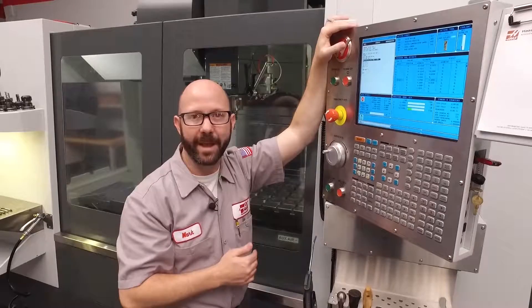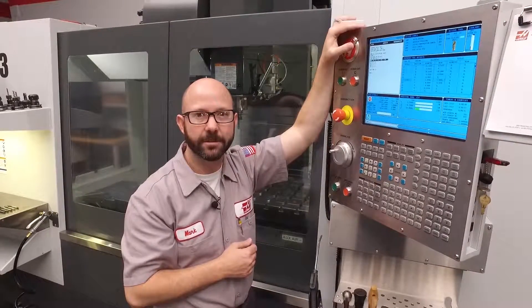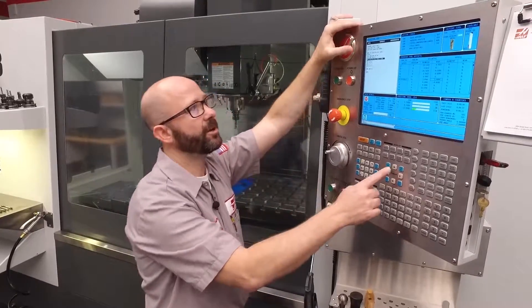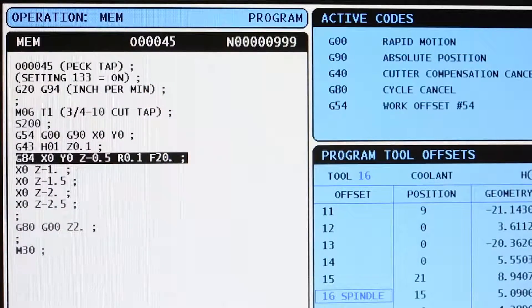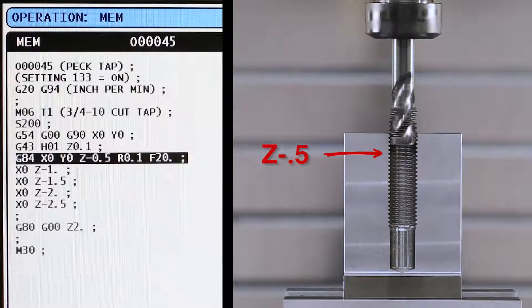Now, each time we command an X or Y location while in our modal G84 tapping cycle, the control is gonna tap a hole. Let's look at our code. On our G84 line, we're gonna tap a hole to Z minus 0.5 at X zero, Y zero.